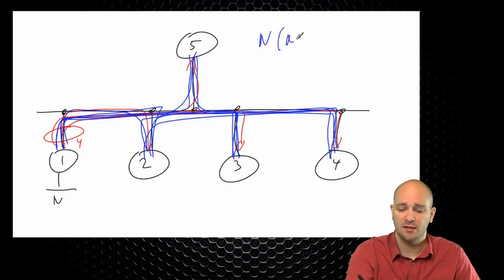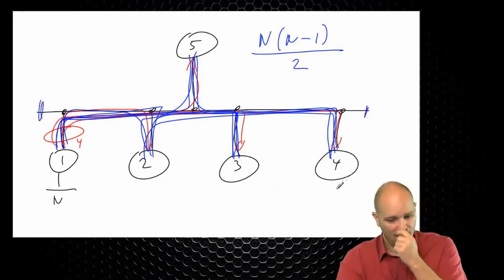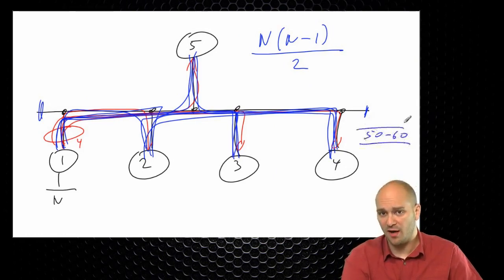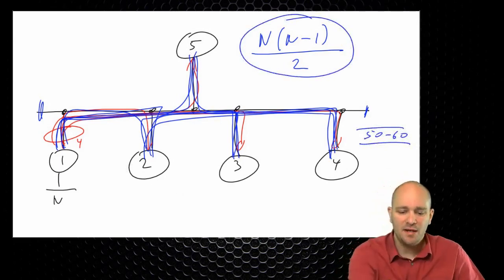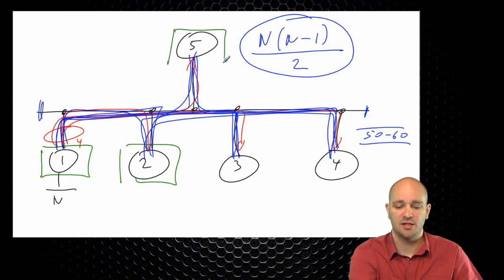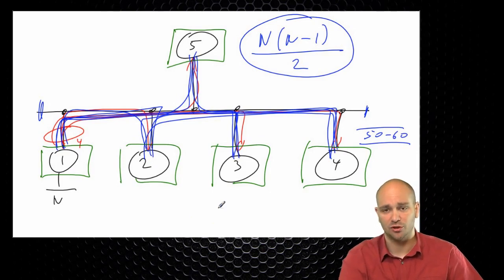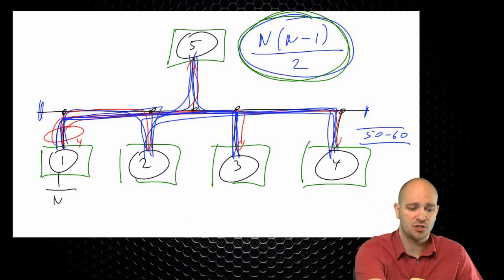On five routers, a full mesh isn't really that much of a deal — every router only has four adjacencies. But what if we had 50 or 60 routers on this segment? This doesn't scale well, especially given that information sent by R1 to R2 is identical to what's sent to R5, R3, and R4. We are simply sending the exact same copy of information to all routers on the segment, which is not very scalable or optimal.